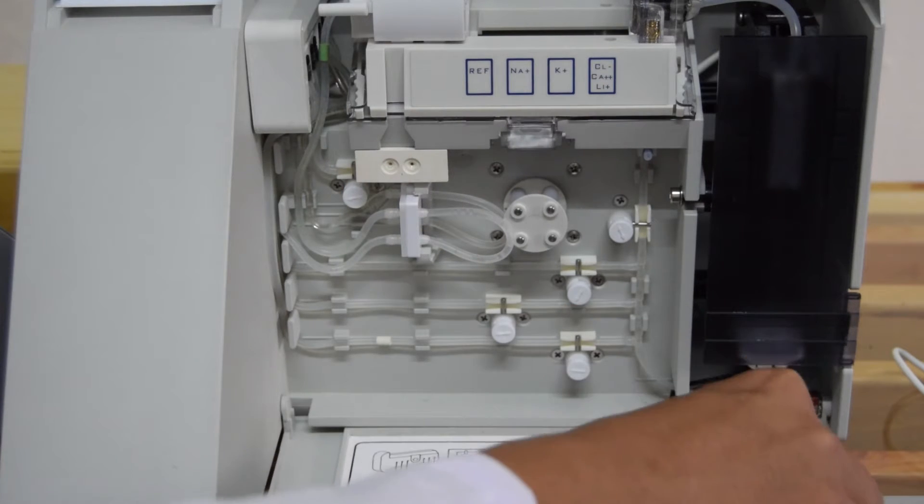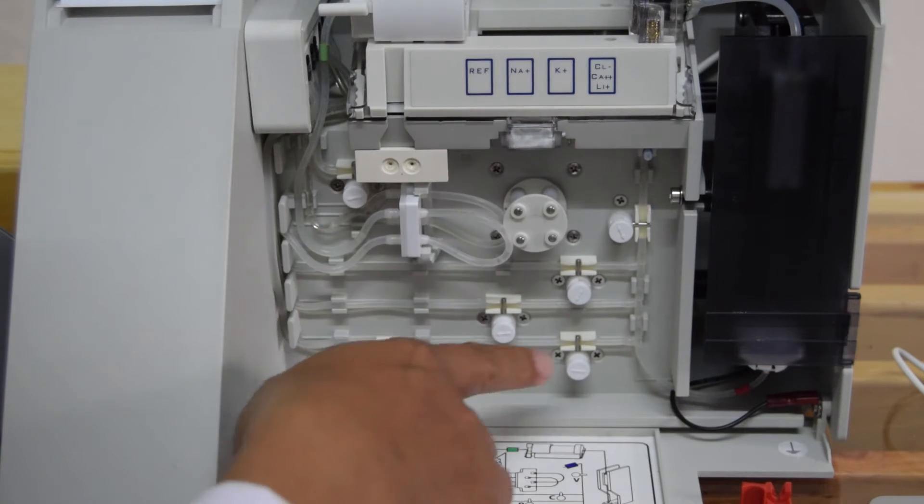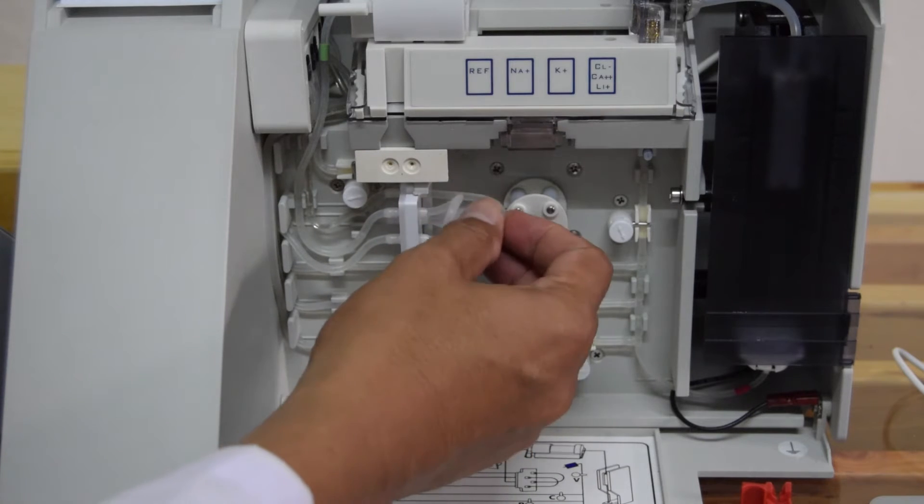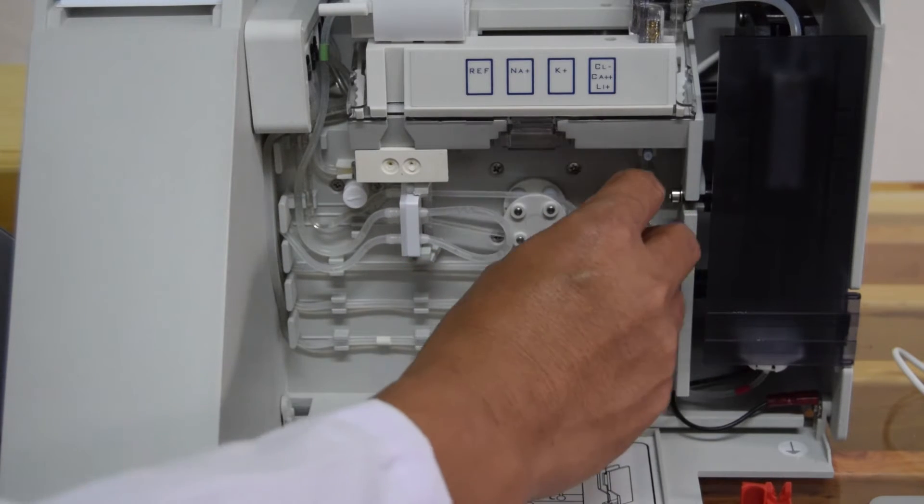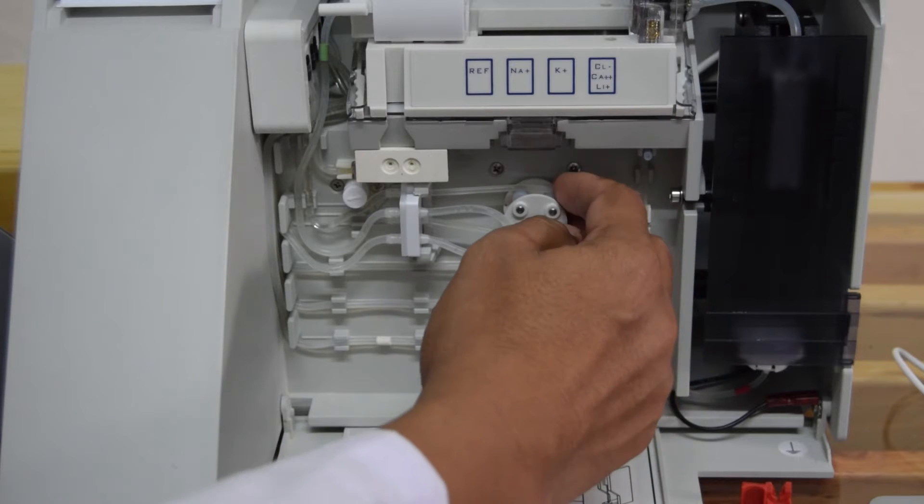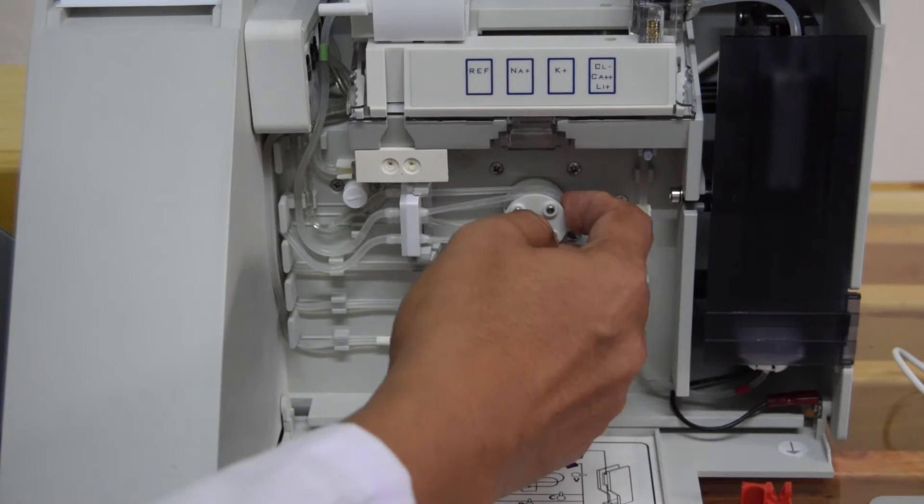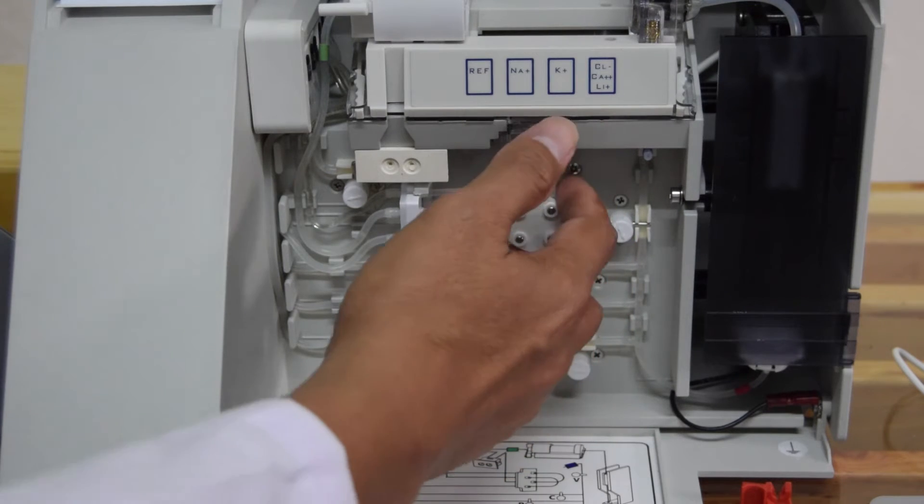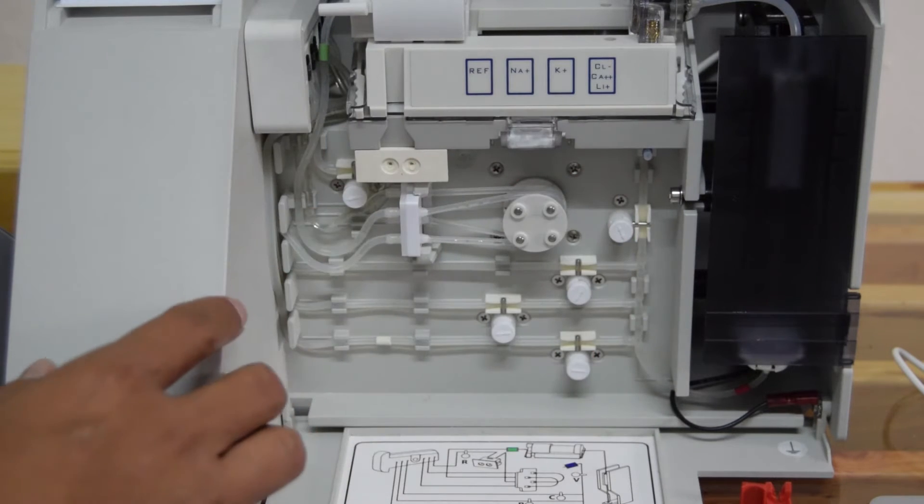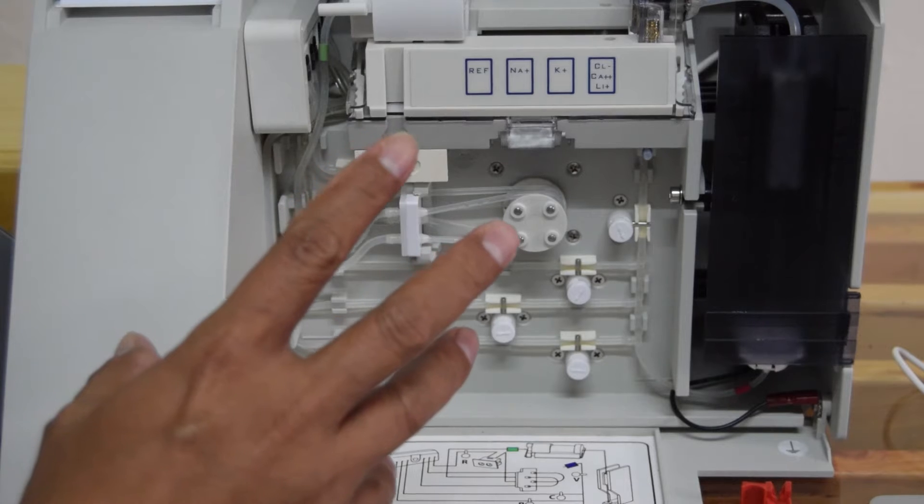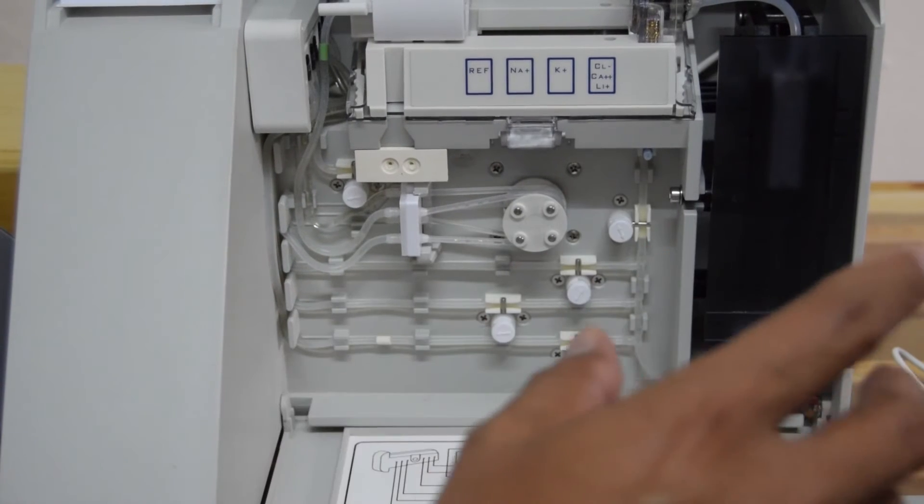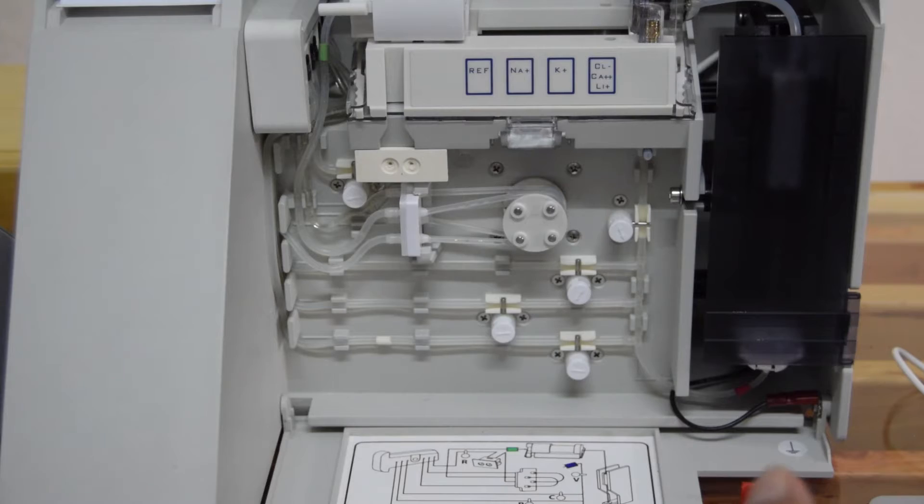Kita lepas satu-satu. Setelah semua terlepas, pastikan semua terlepas. Mengaitkan selang pinch valve ke weld, ke roda, roda motor. Seperti ini. Selanjutnya, kita akan melakukan instalasi elektroda. Mas Fais. Sudah selesai. Dibuka semua.